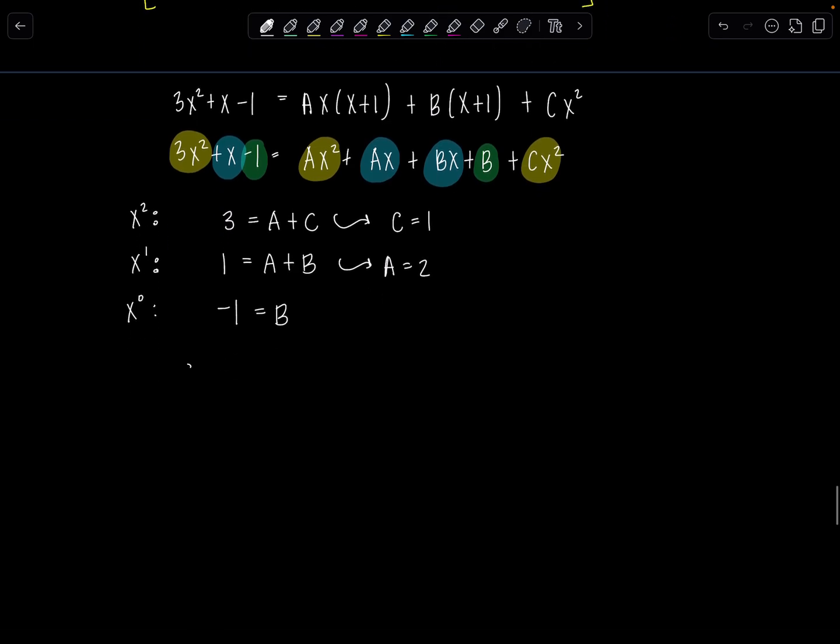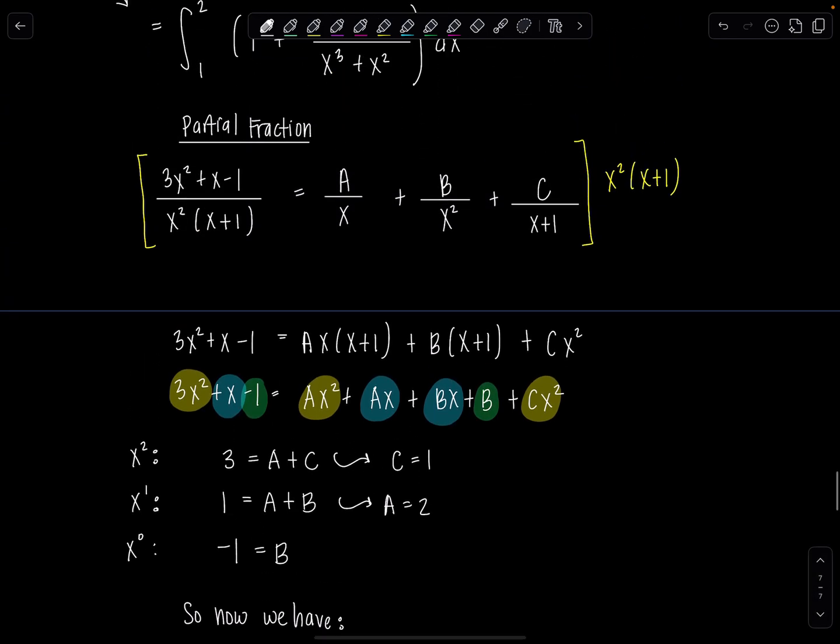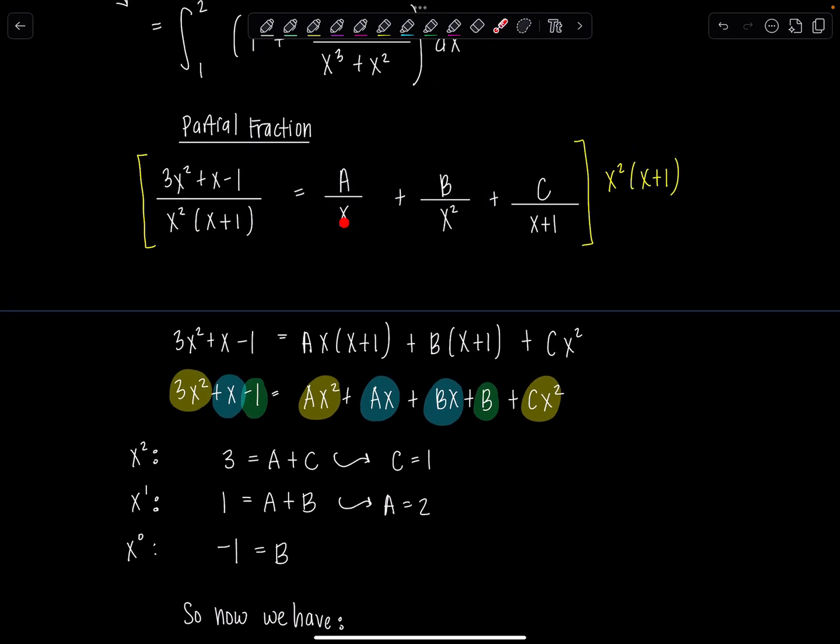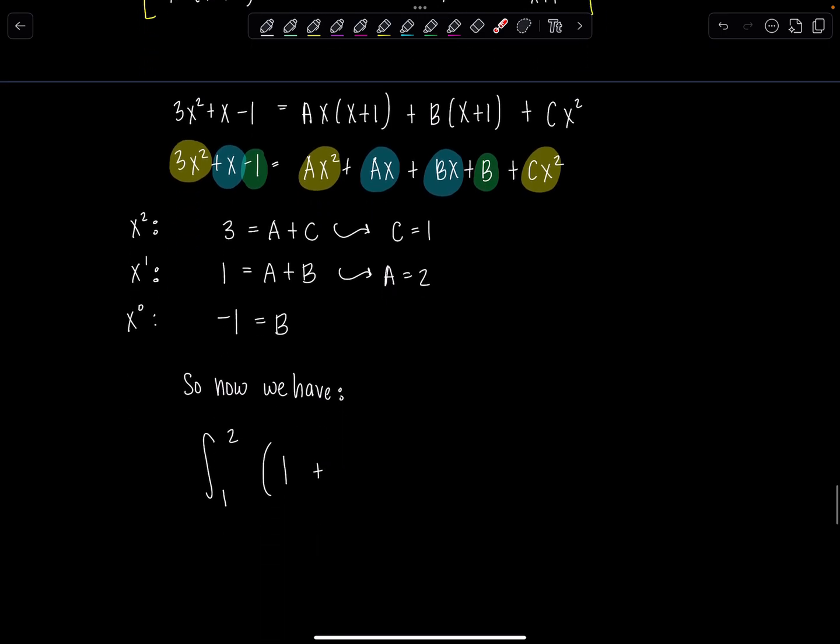So now we are ready to return to our integral. So now we have, remember we had limits from 1 to 2. We already had from long division a 1 plus, A over x, so we'll have 2 over x minus, because B is negative 1, 1 over x squared plus C is 1 over x plus 1. So we have 1 plus, this is going to be 2 over x, A over x, minus 1 over x squared plus 1 over x plus 1 dx.